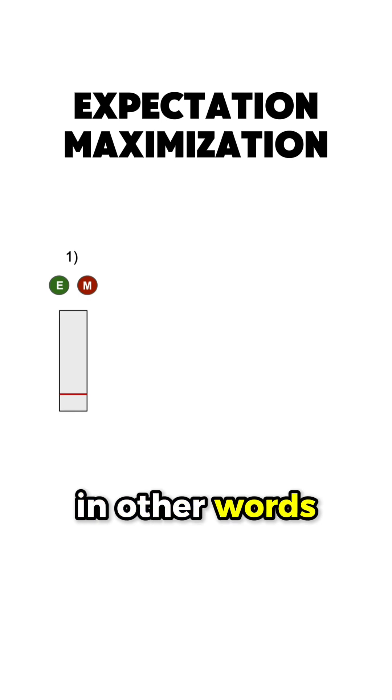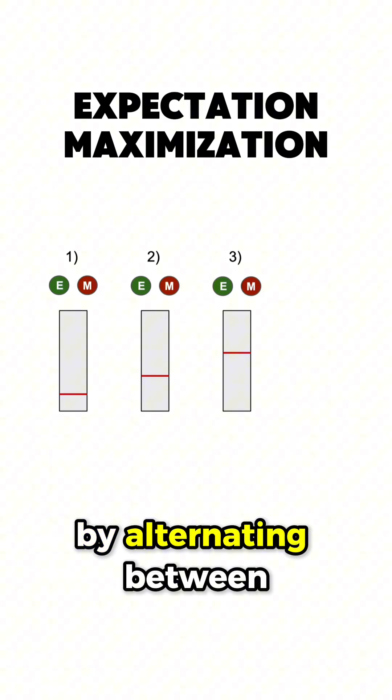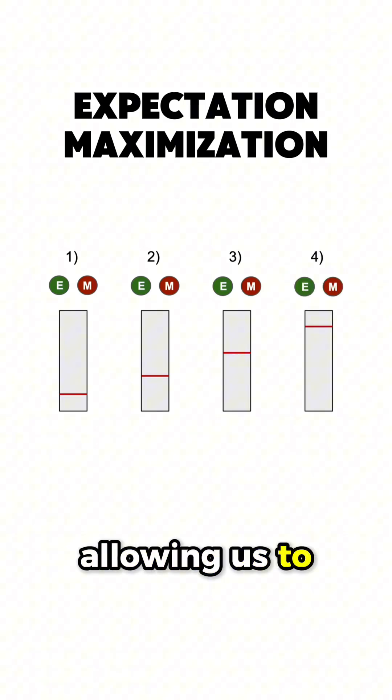In other words, we are bootstrapping from our initial guess by alternating between the E-step and the M-step, allowing us to refine our parameter estimates.